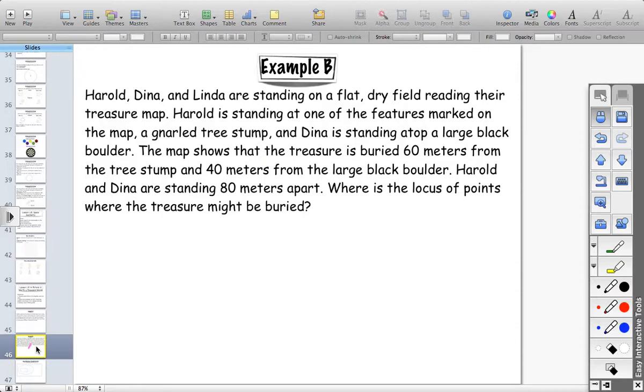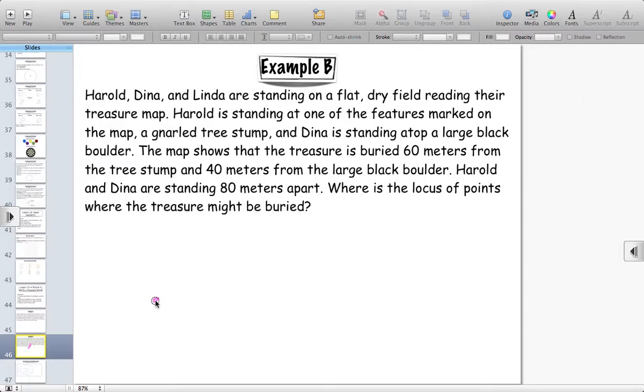All right. First thing we want to do is consider, first off, where are Harold and Dina? So, let's say that Harold is hanging out over here on the tree stump. We'll say T for tree stump. And Dina is hanging out over here on the right-hand side on the boulder. So, B for boulder. And we know that the distance, Harold and Dina, are 80 meters apart. So, from here to here, that's 80 meters.